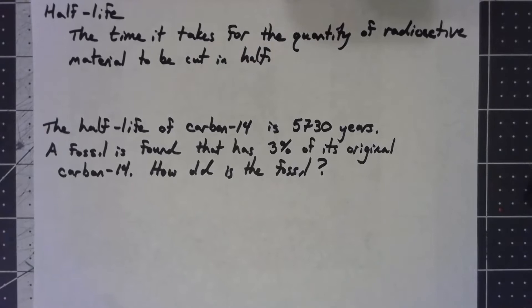This principle that it's a very fixed constant until you've got half the amount remaining is how they do carbon dating.